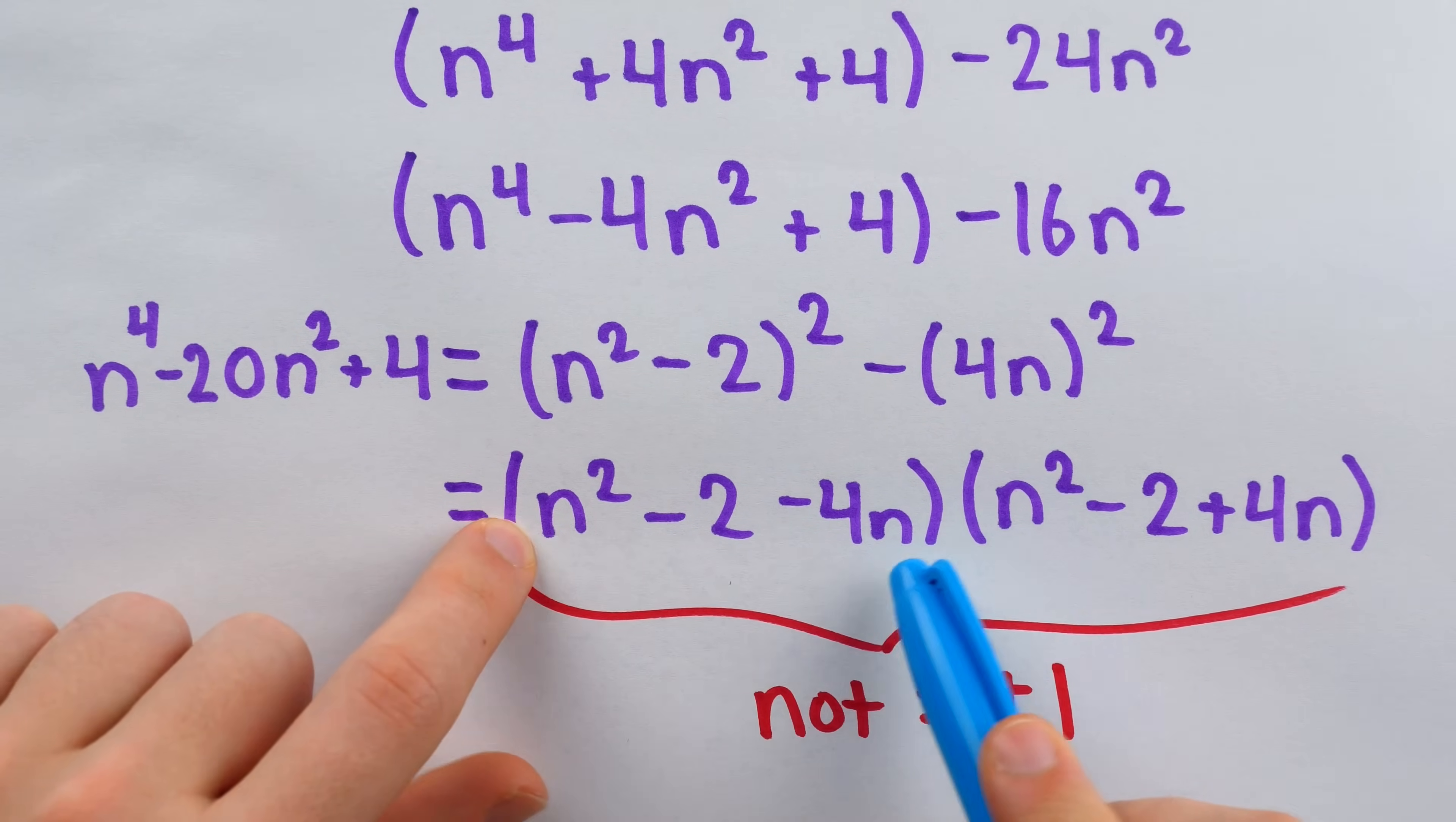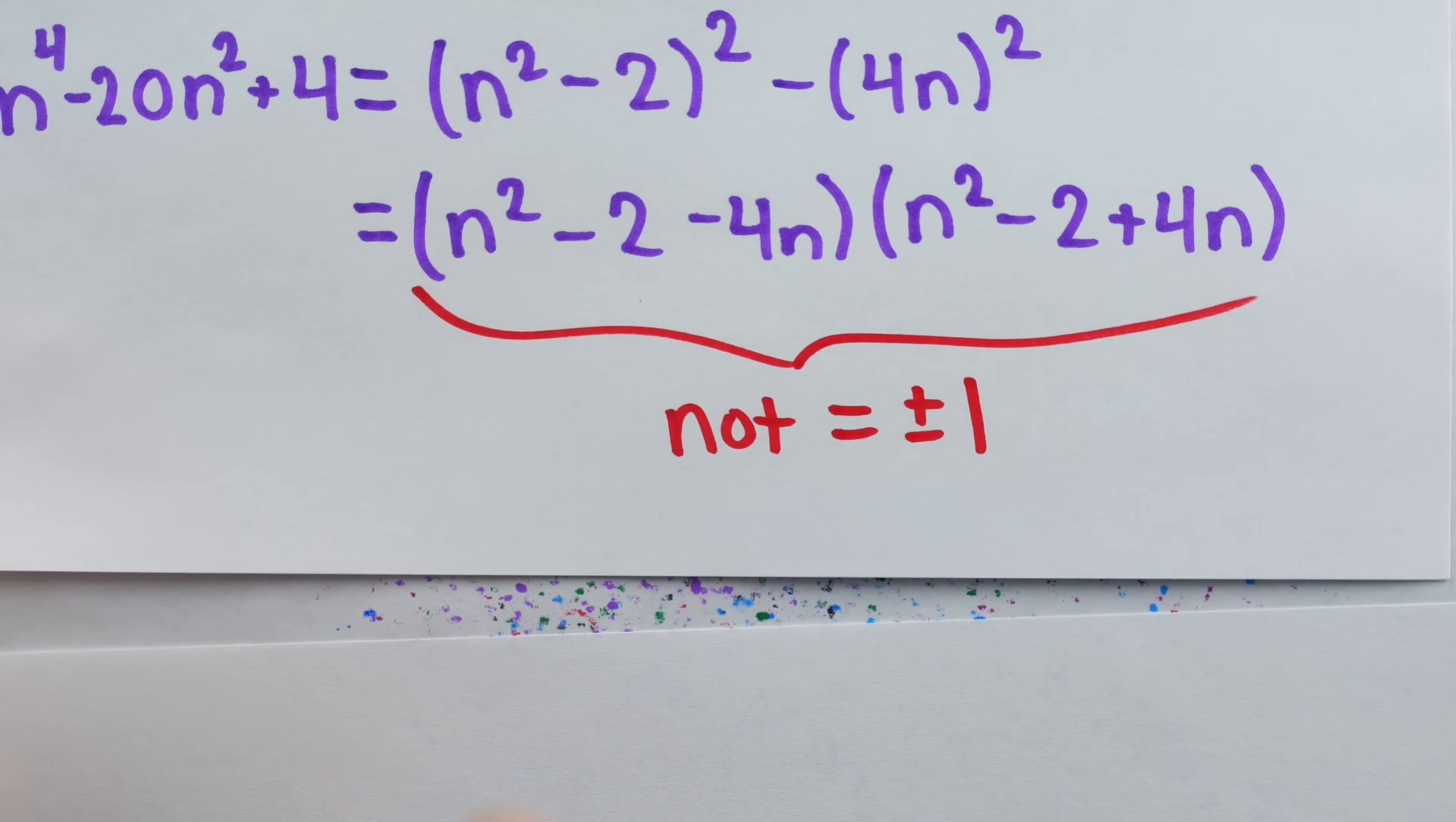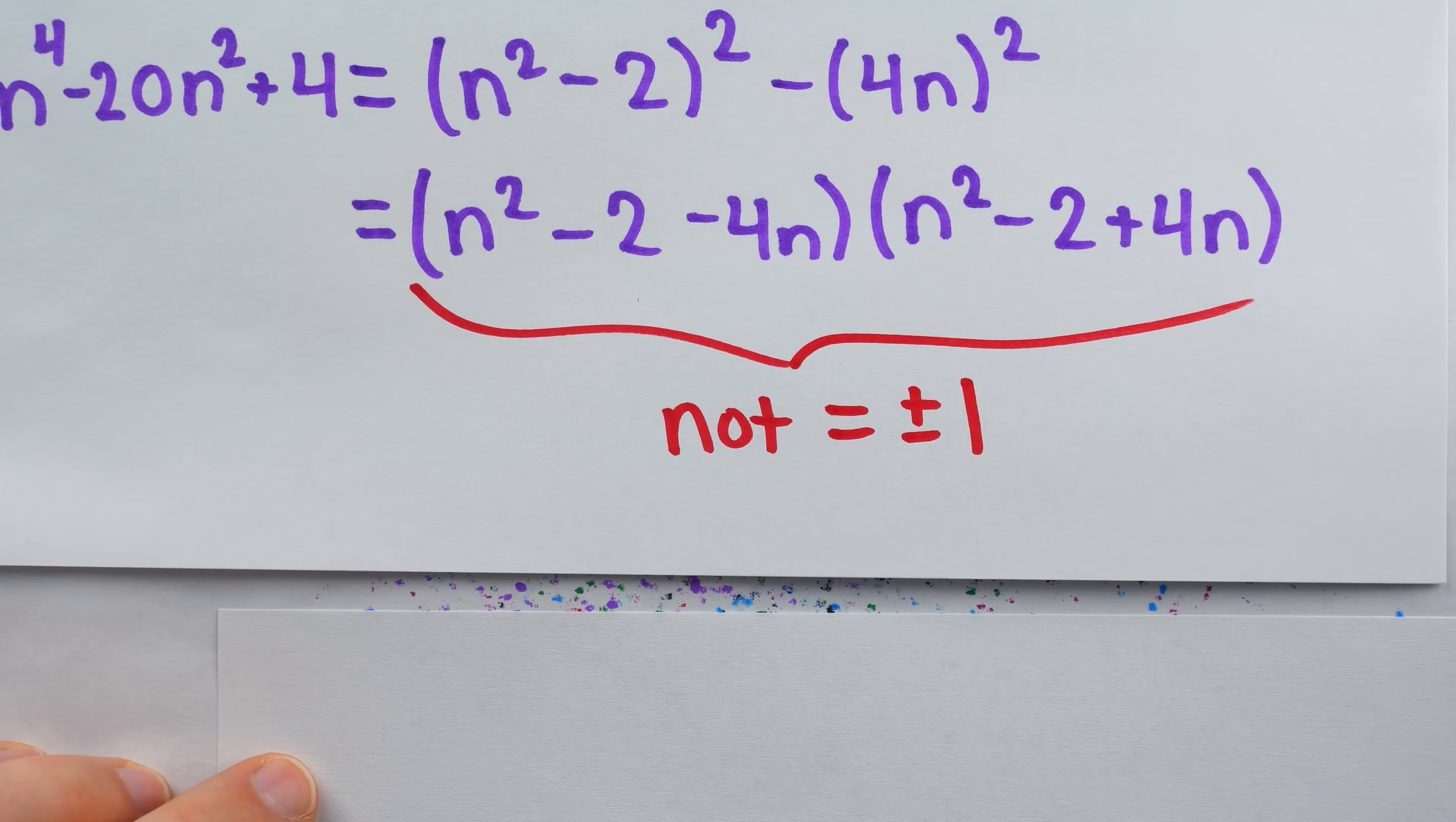If we show that this polynomial can always be written as this product, where neither factor is plus or minus 1, then we've demonstrated that the polynomial always outputs composite numbers for integer values of n. And to show that neither of these factors can be equal to plus or minus 1 is a straightforward contradiction argument. Remember that we're assuming n is an integer, and that's where we're going to run into a problem here. Essentially, we have four cases. I'll show you two of them because they're all more or less the same. We have to show that this factor can't be plus or minus 1, and we have to show that this factor can't be plus or minus 1. For starters, let's show that this factor can't be positive 1.